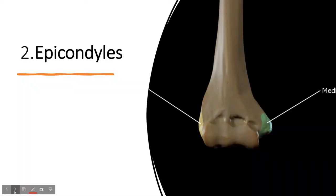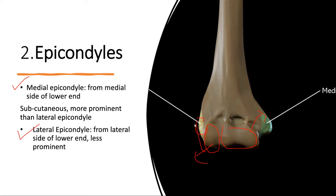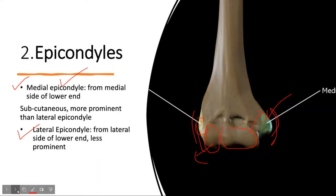There are two epicondyles: the medial epicondyle and the lateral epicondyle. The medial epicondyle is medial to the trochlea, and the lateral epicondyle is lateral to the capitulum. The medial epicondyle is more prominent, subcutaneous, and you can feel it under the skin. The lateral epicondyle is less prominent.